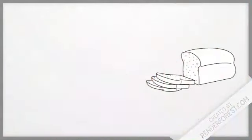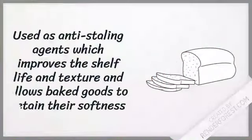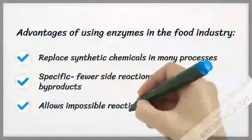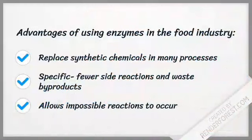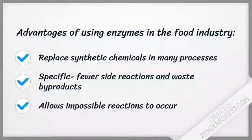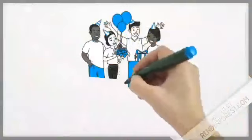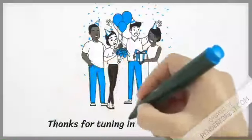Glucoamylase and alpha-amylase are also used as anti-staling agents, which helps improve the shelf life and allows baked goods to retain their softness. The advantages of using enzymes in the food industry is that they can replace synthetic chemicals in many processes. They are also very specific, meaning there will be fewer side reactions and fewer waste byproducts, giving higher quality products and reducing the likelihood of pollution. This would also allow otherwise impossible reactions to occur. Thus, that covers the use of alpha-amylase and glucoamylase in the food industry.